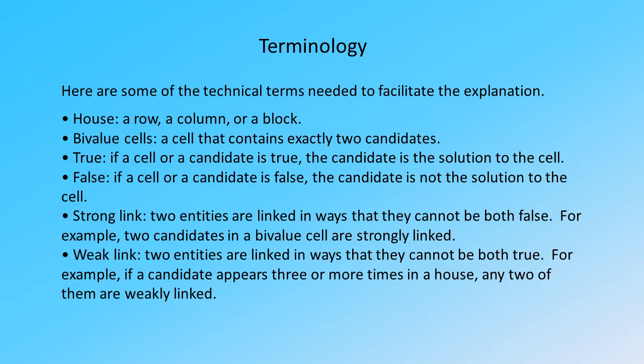Weak link: two entities are linked in ways that they cannot both be true. For example, if a candidate appears three or more times in a house, any two of them are weakly linked.